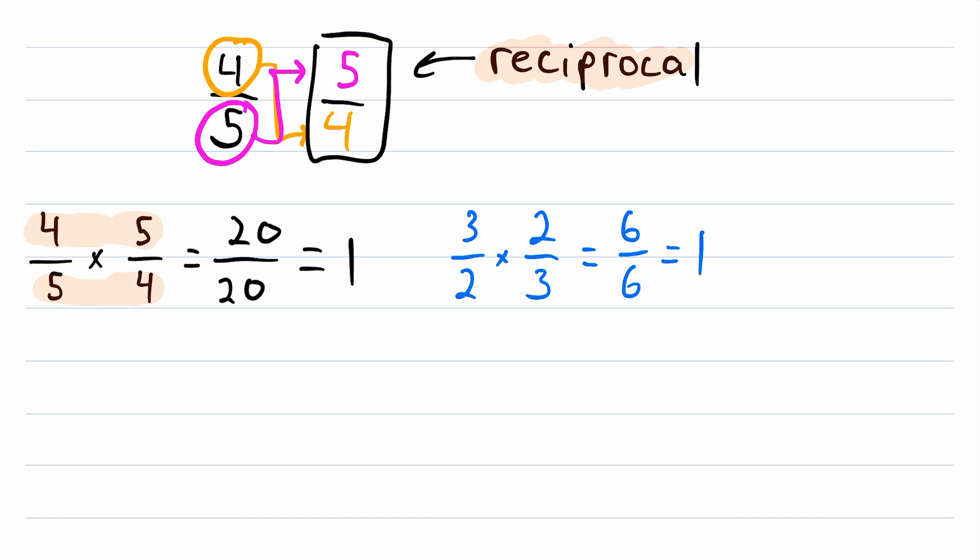So the reciprocal of a fraction is just the number you have to multiply the fraction by to get 1. And you can find that number by flipping the fraction around, swapping the numerator and denominator.